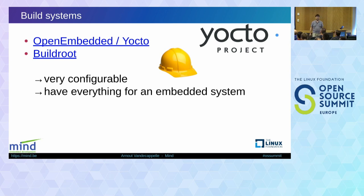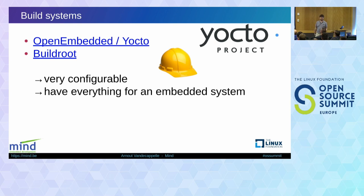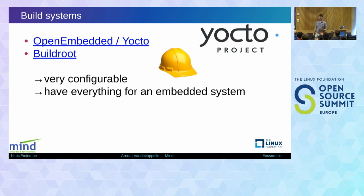Let's start with a question about build systems. Most of you are probably familiar with some kind of build system to produce an embedded system. There are two which are very well known and almost everybody uses them: Open Embedded or Yocto — I'm going to use Yocto in the remainder of this talk — and Buildroot. They're in fact very similar and I use both of them. What is good about them is that they are very configurable and have everything that you need. But there is still some redundant work you have to do to get to an actual product.